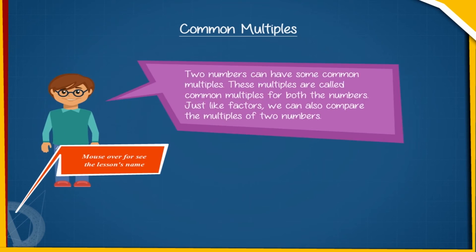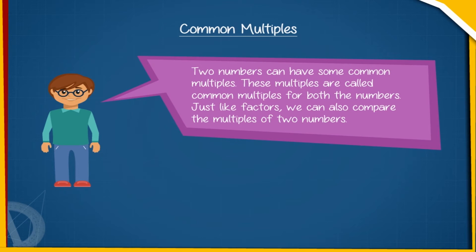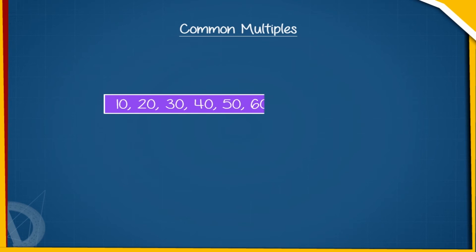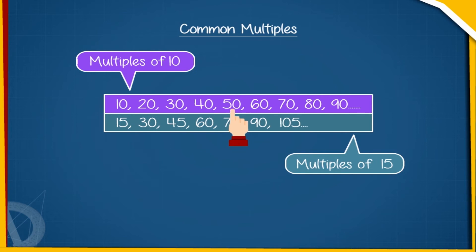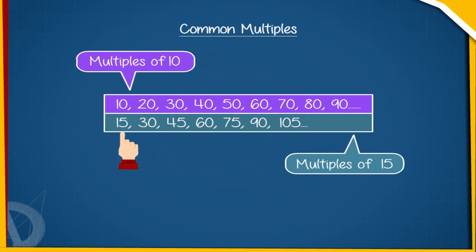Common Multiples. Two numbers can have some common multiples. These multiples are called common multiples for both the numbers. Just like factors, we can also compare the multiples of two numbers. Let us compare the multiples of 10 and 15. The multiples of 10 are 10, 20, 30, 40, 50, 60, 70, 80, 90, and so on. The multiples of 15 are 15, 30...